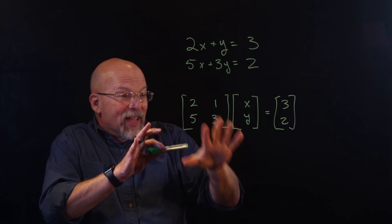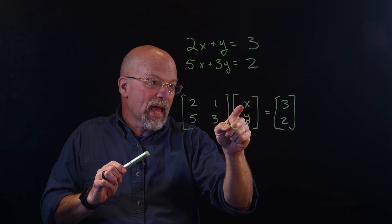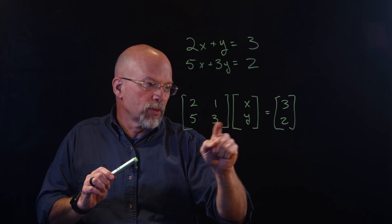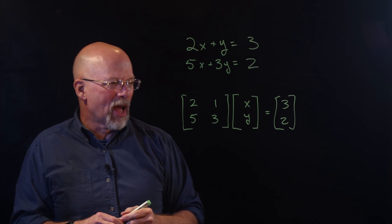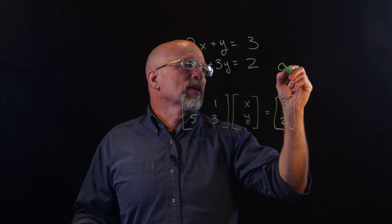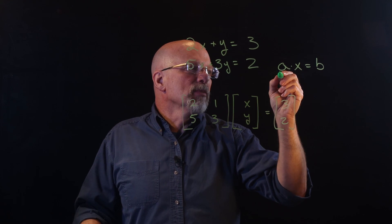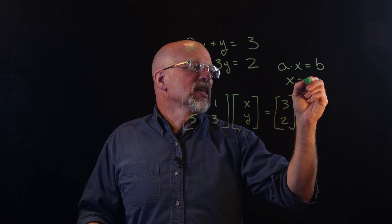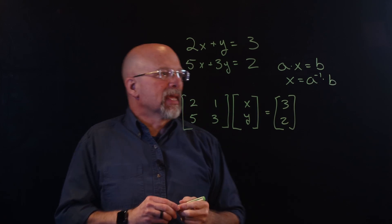If I run this matrix multiplication, 2x plus 1y equals 3, and 5x plus 3y equals 2. If you've done algebraic expressions, you know that for something like A times x equals b, I can move A to the other side and say x equals the inverse of A times b.